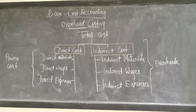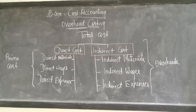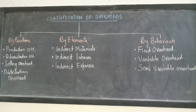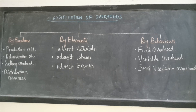In this particular chapter, we will be discussing about these overheads. The overhead costs can be classified on three bases: one is based on functions, second one is based on elements, and third one is based on behavior.